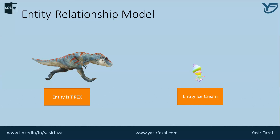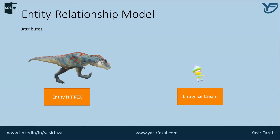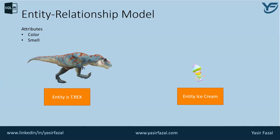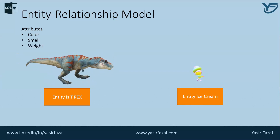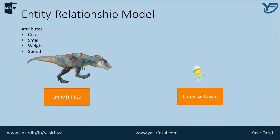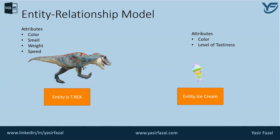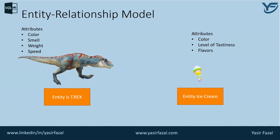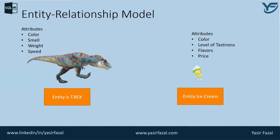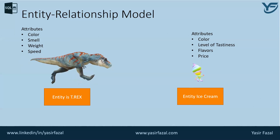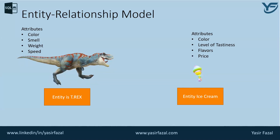Both entities have some attributes. For T-Rex, the attributes are its color, its smell, its weight, and its speed. For Ice Cream, the attributes would be color, level of tastiness, flavors, and the price of the ice cream.